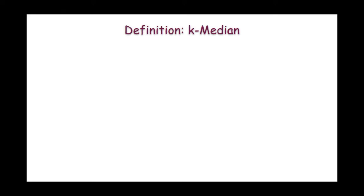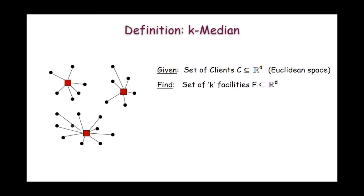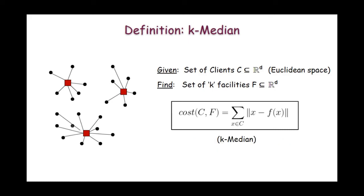So first let me start with the definition of the k-median problem. In the k-median problem we are given a set of clients in a d-dimensional Euclidean space, and our goal is to find a set of k facilities in the same Euclidean space such that the sum of the transportation cost of all the clients to their closest facility is minimized. This transportation cost is given by the following objective function, in which we simply take the sum of the Euclidean distances of every client to their closest facility. Here f(x) denotes the facility location that is closest from x.